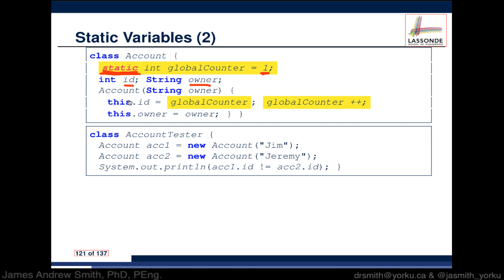We still have the ID and the owner name. In the constructor, we say the ID is equal to globalCounter, which was defined at the class level, and then we immediately increment globalCounter. So every single time you call the constructor to create a new object, globalCounter gets incremented. You take the old value, assign it to the new object, then change it so the next object uses the updated value.